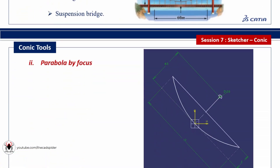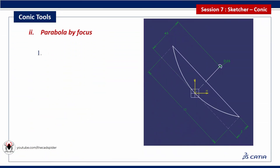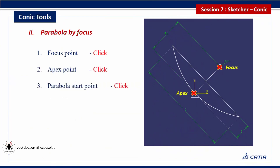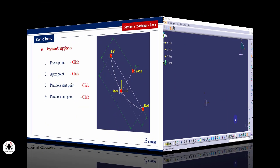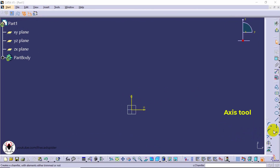To draw a parabola, specify the following points: focus point, apex point, parabola start point, and parabola end point. Now see the exercise for parabola. Draw an axis line.